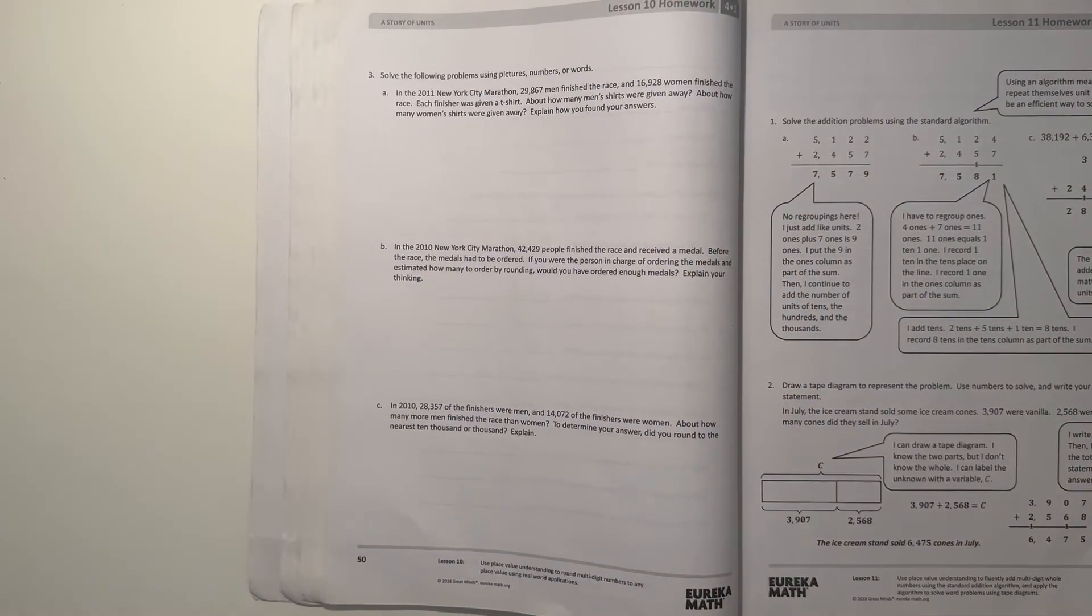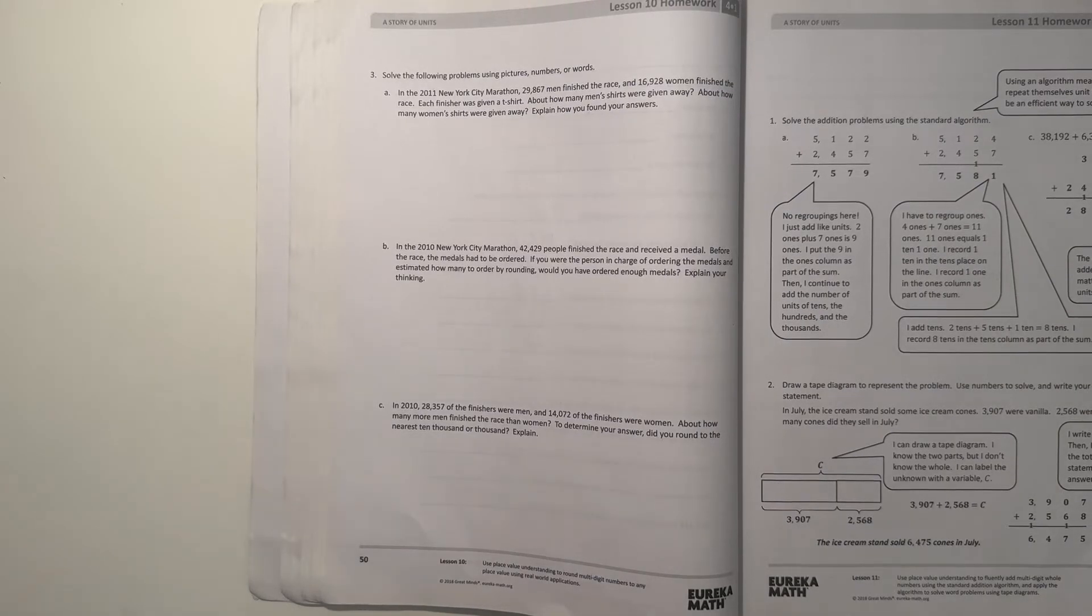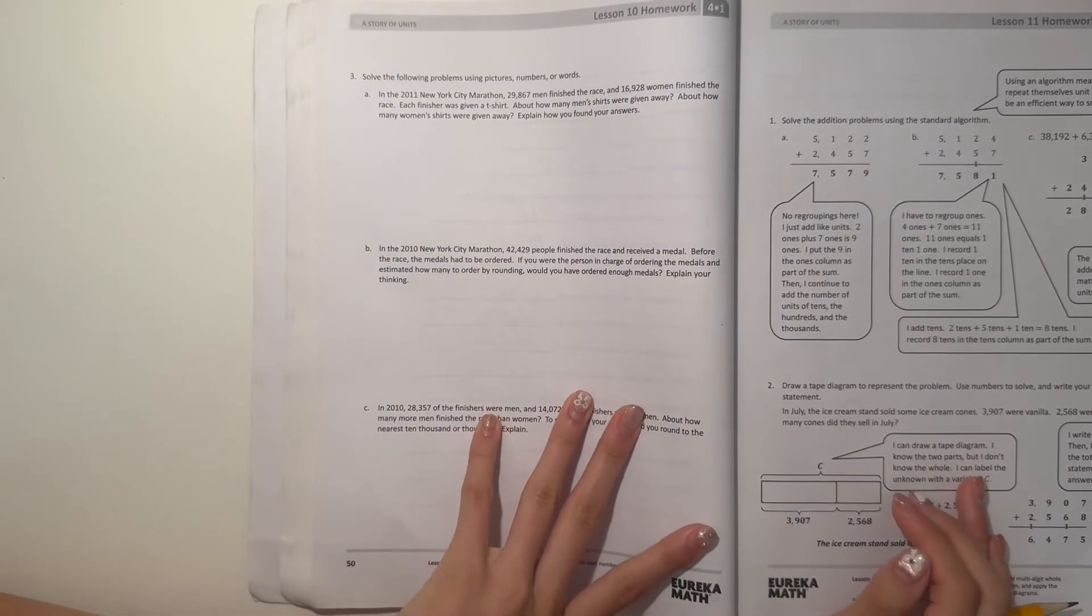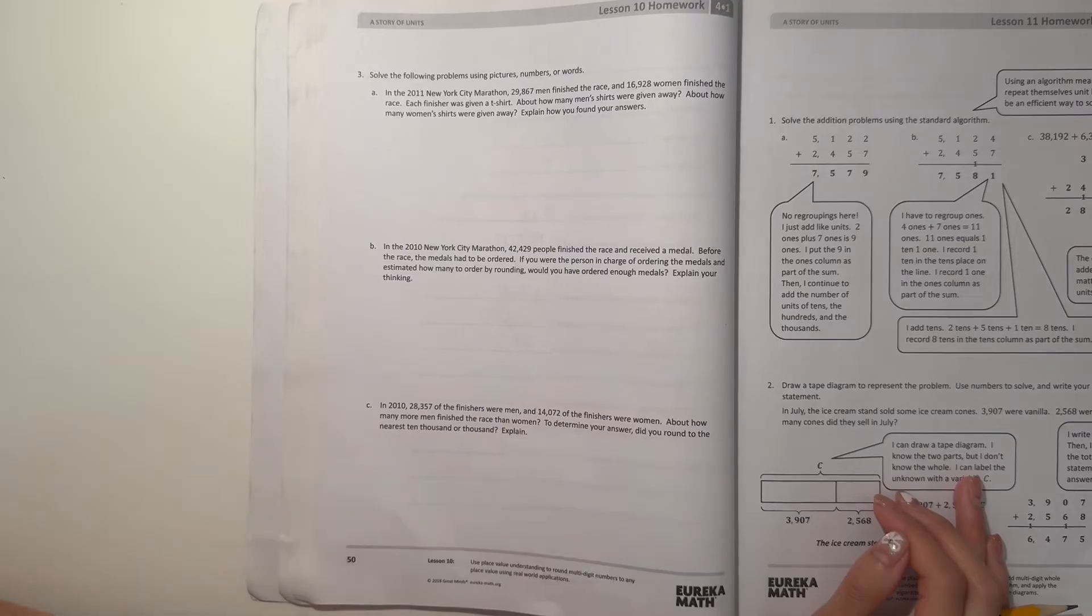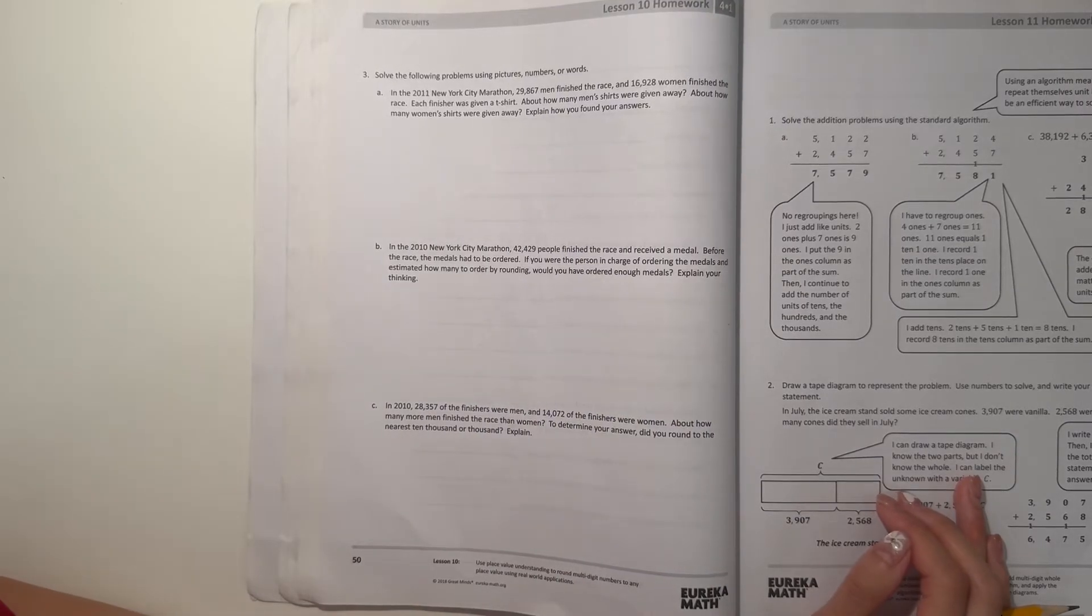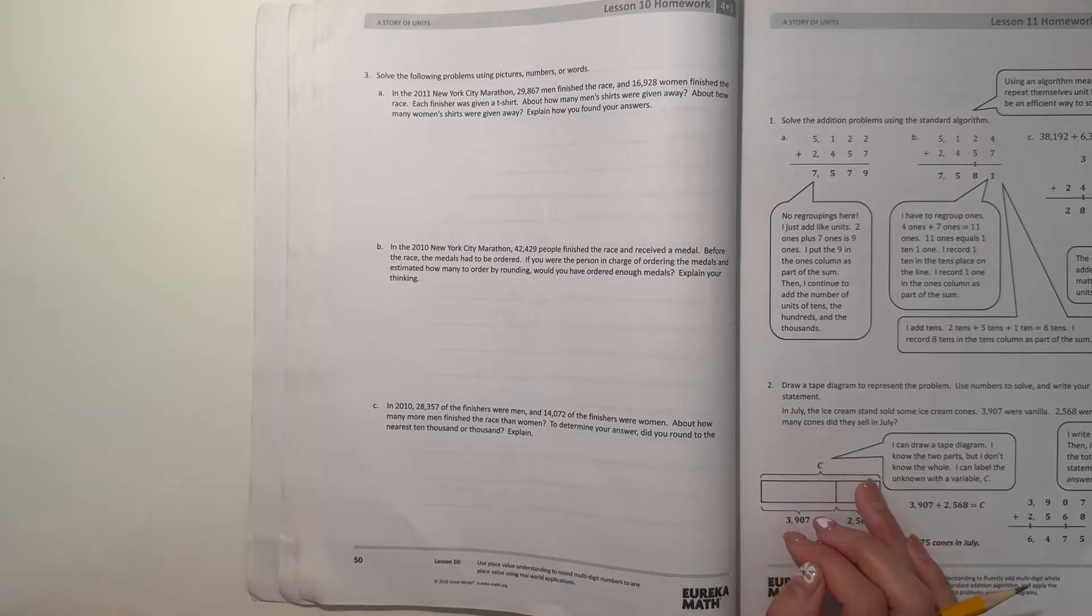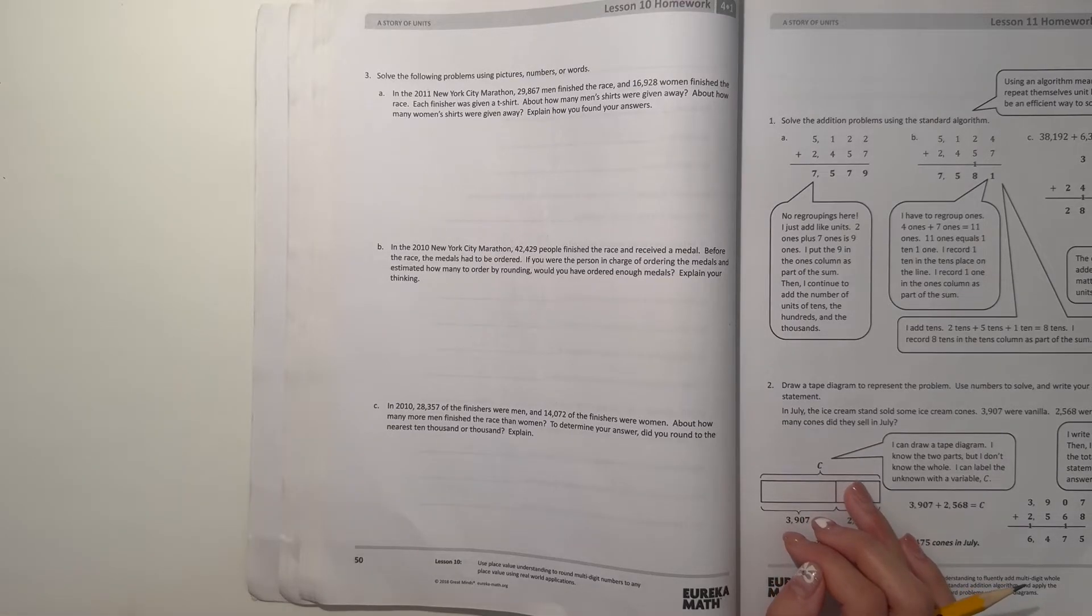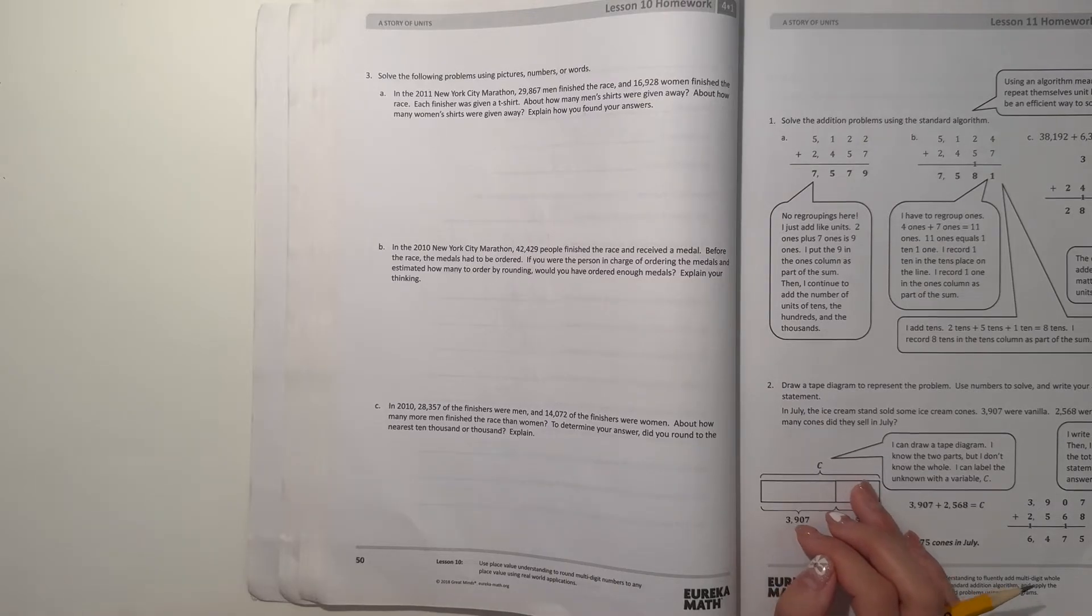Number three, solve the following problems using pictures, numbers or words. A, in the 2011 New York City Marathon 29,867 men finished the race and 16,928 women finished the race. Each finisher was given a t-shirt. About how many men's shirts were given away? About how many women's shirts were given away? Explain how you found your answers.